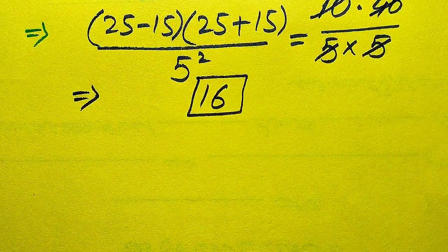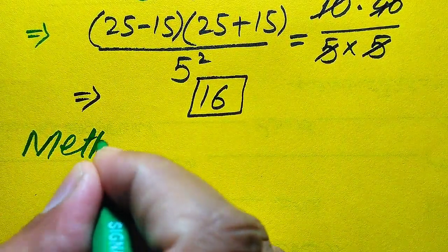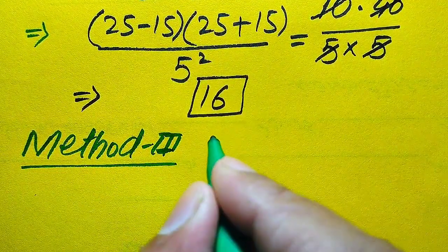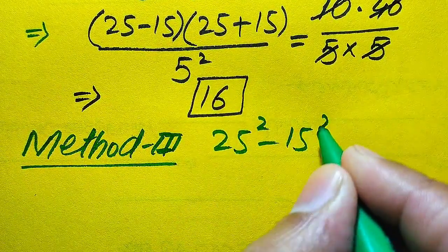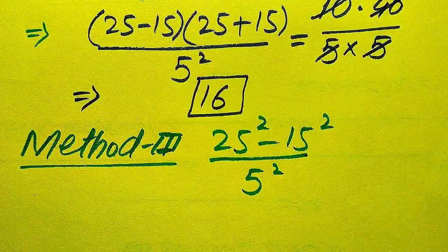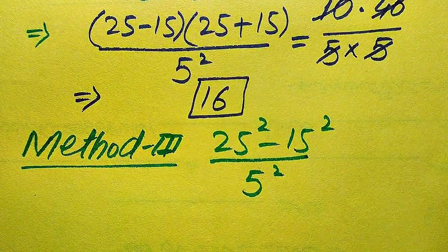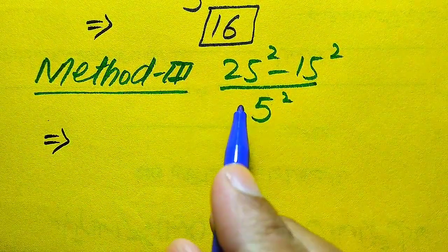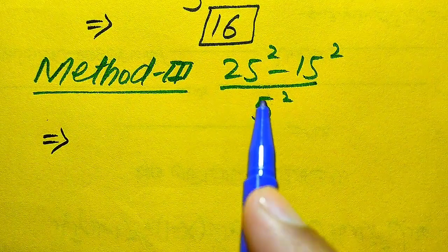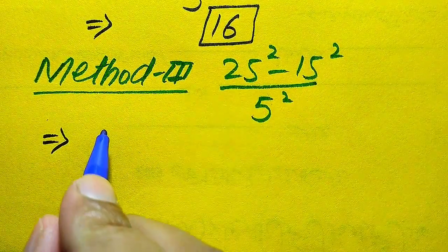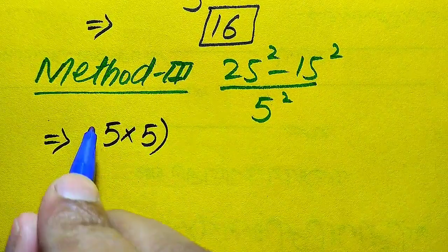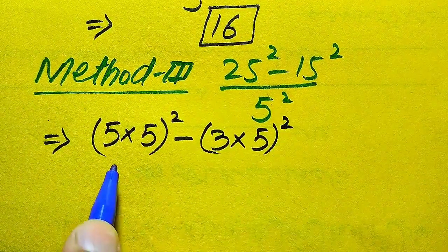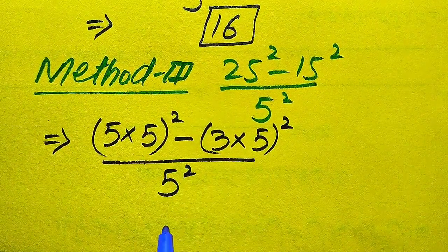Now we move to the third method. Our given expression is again 25 squared minus 15 squared, divided by 5 squared. In the third method we use a multiplication technique and convert all numbers into prime factor form. The prime factors of 25 are 5 multiplied by 5, so we have (5×5)² minus the prime factors of 15 are 3 multiplied by 5, giving (3×5)², divided by 5 squared.